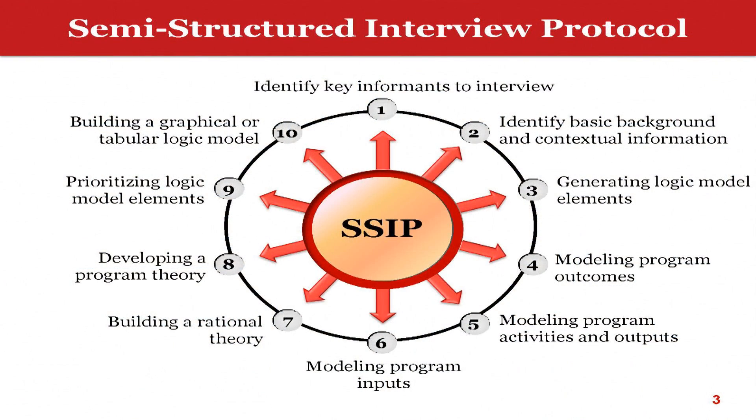I'm going to present the steps for applying this particular approach using a logic model and show you an example of a logic model we recently created as a draft for a program we are evaluating. The first step is to identify the key informants and key stakeholders in the program. You want to talk to people who have information about the program, understand how it works, and have a vision of it — from higher-ups to those implementing it in the field — because they will give you different types of information.